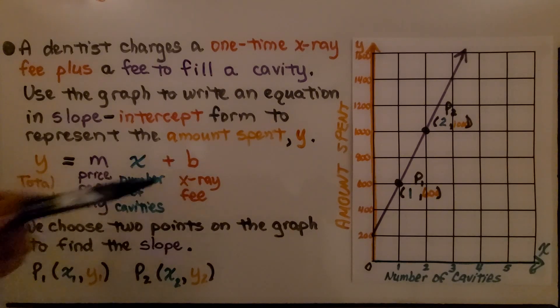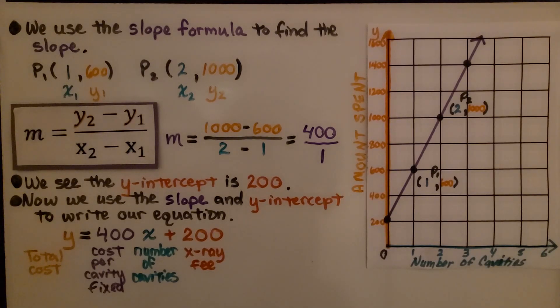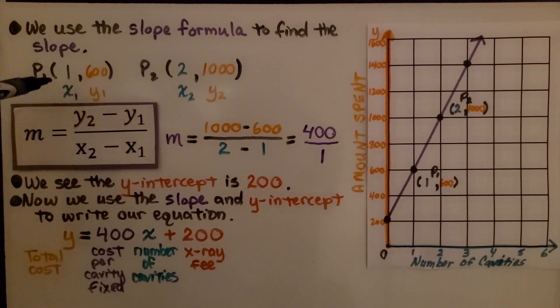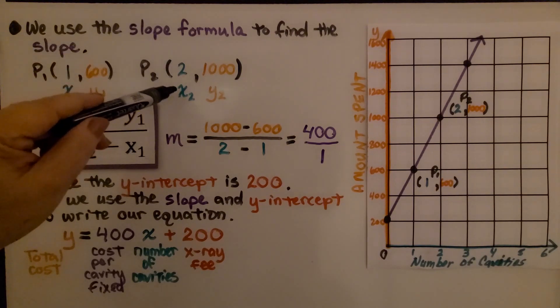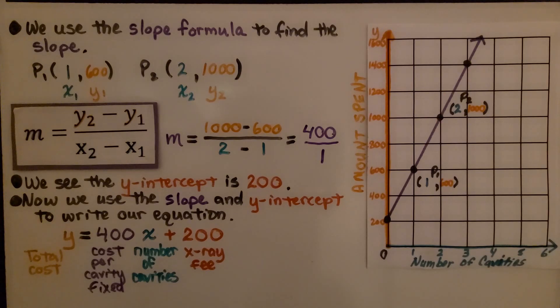We choose two points on the graph to find the slope, point 1 and point 2, with the x sub 1 and y sub 1 value, and the x sub 2, y sub 2 value. We use the slope formula to find the slope. So here we have point 1 and point 2. Our first x-value is 1, our first y-value is 600, our second x-value is 2, and our second y-value is 1000.